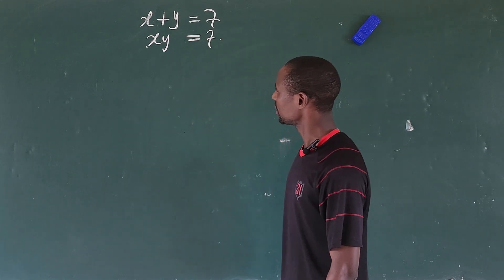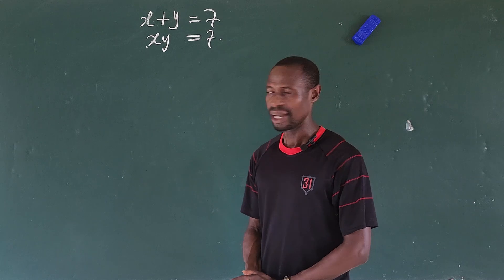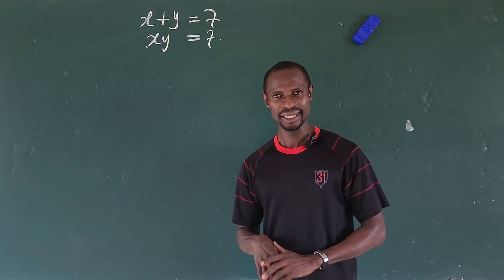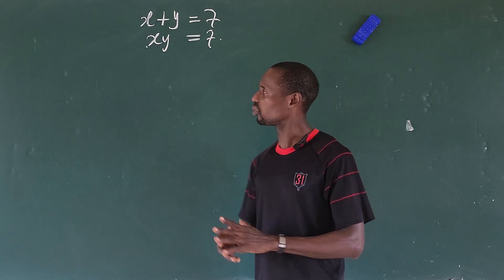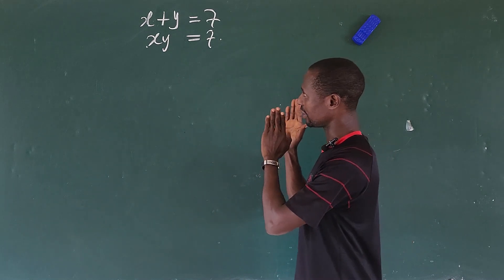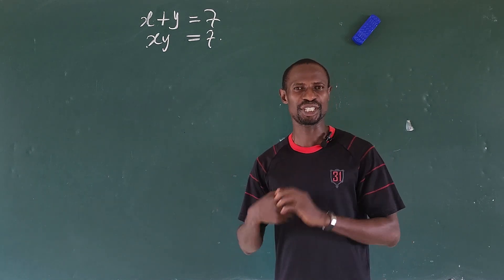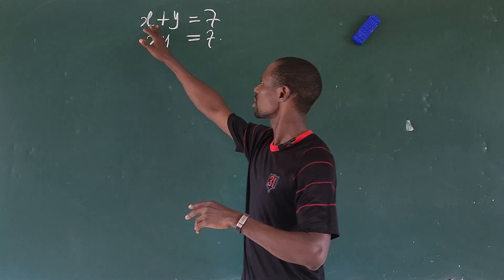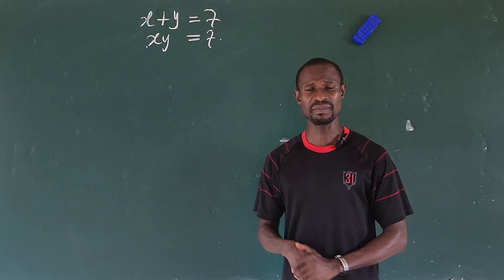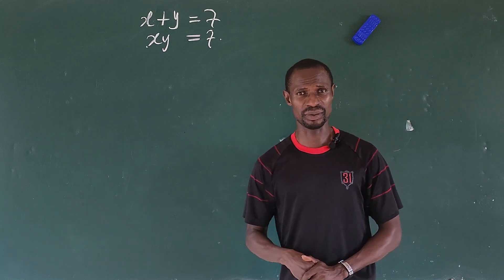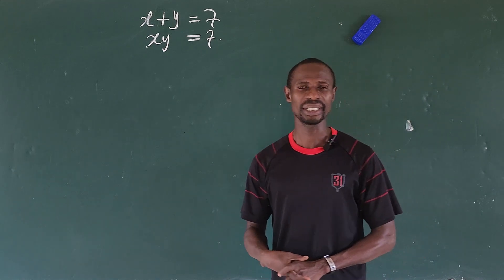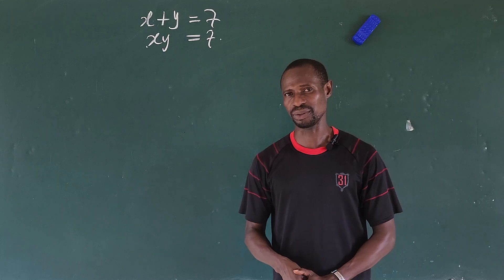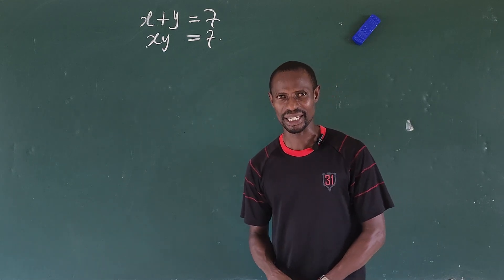Hi again, we have another challenge here — it's a math algebra problem. I've solved a similar question on this channel already, so I'll leave a link in the description below. Here we have x plus y equals 7, and xy equals 7. It's a very simple math challenge, but let's go systematically, as someone requested I make a video on it.